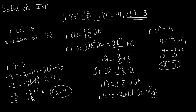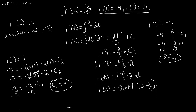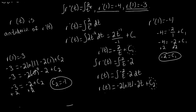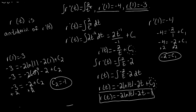We've found the c value that satisfies our initial condition. Now we plug c2 into our general anti-derivative to get the specific anti-derivative that satisfies the initial value condition: r of t equals negative 2 times the natural log of the absolute value of t, minus 2t, minus 1. This is the specific anti-derivative that satisfies both the initial value condition for our first derivative and the initial value condition for r of t.